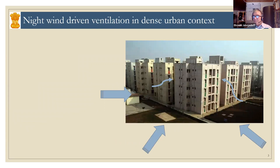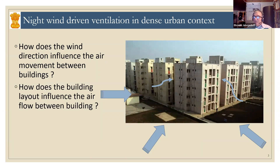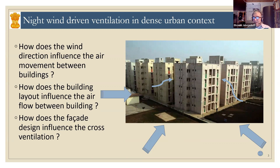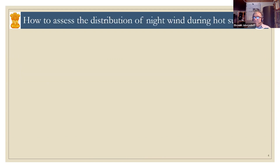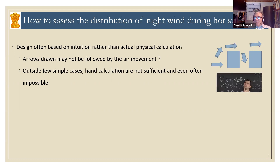A few words about the concept. We can ask ourselves how wind direction influences air movement during the hot summer. The building layout of a project, with the density we have nowadays in a country like India in the urban context, is very high. The facade design can also influence the way air can enter or pass along the facades. Often designs are based on intuition, and arrows are drawn, but they may not follow the actual air movement. Outside very simple cases, calculations are not sufficient and often even impossible.